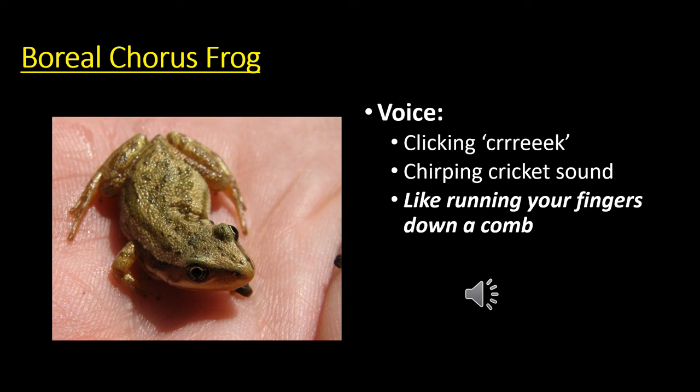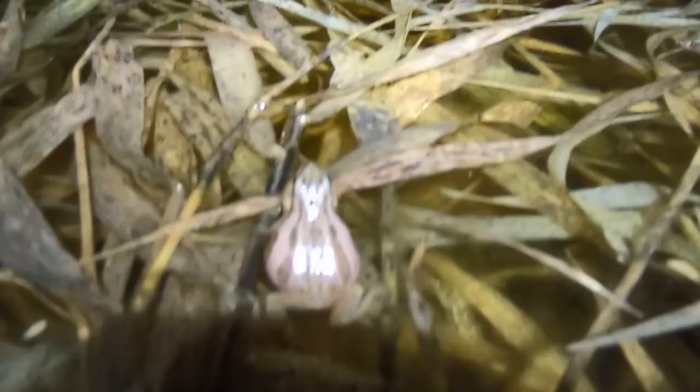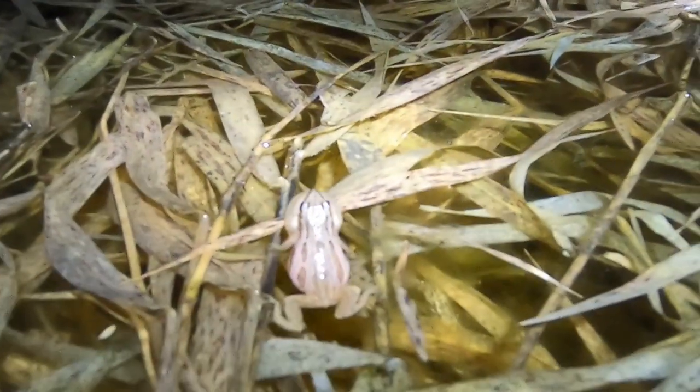Here's a recording of multiple chorus frogs calling — there's some wind, but you can hear that creaking sound. We can also take a look at a video of one calling in a flooded prairie. You can see the vocal sac of the chorus frog expand as it calls — it has one large vocal sac that branches out. Males will typically call all year, especially after rain events, but their breeding season only lasts a few weeks.